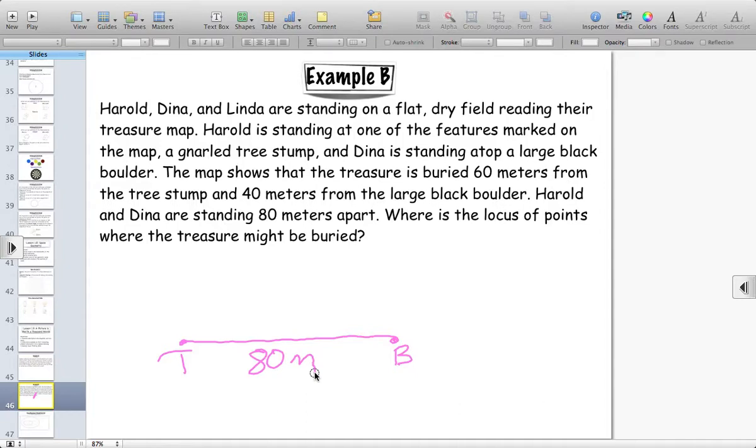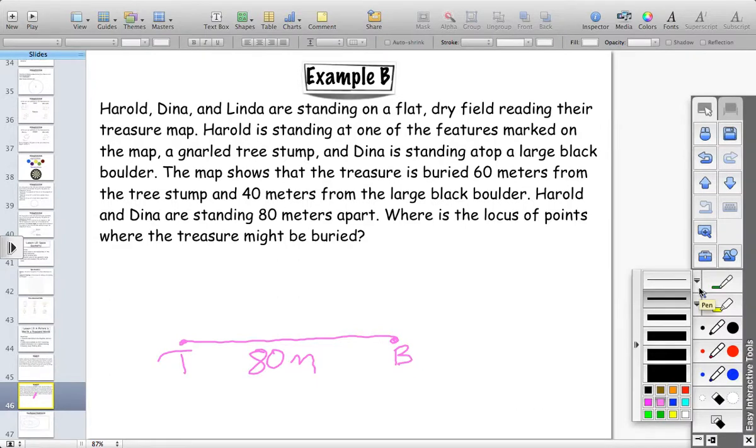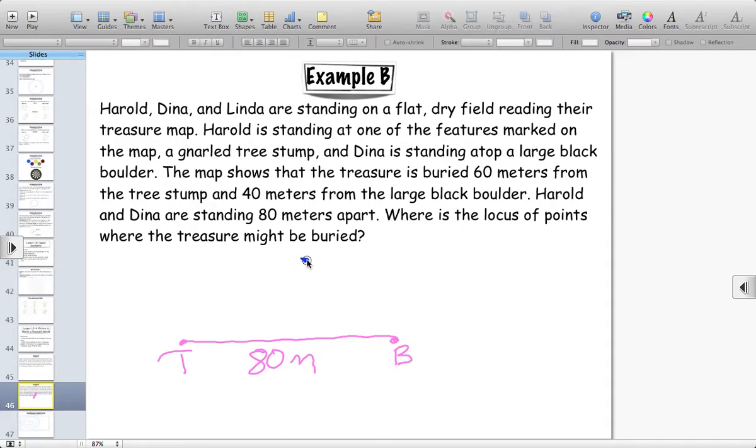Now, it tells us that the treasure, according to the map, the treasure is 60 meters from the tree stump and 40 meters from the large black boulder. So, immediately, some of you might be thinking, okay, well then that means that the treasure could be somewhere here. If we say that this is 60 meters and this is 40 meters, that's where the treasure is. That is certainly a possibility, but we have to imagine that there's another possibility.